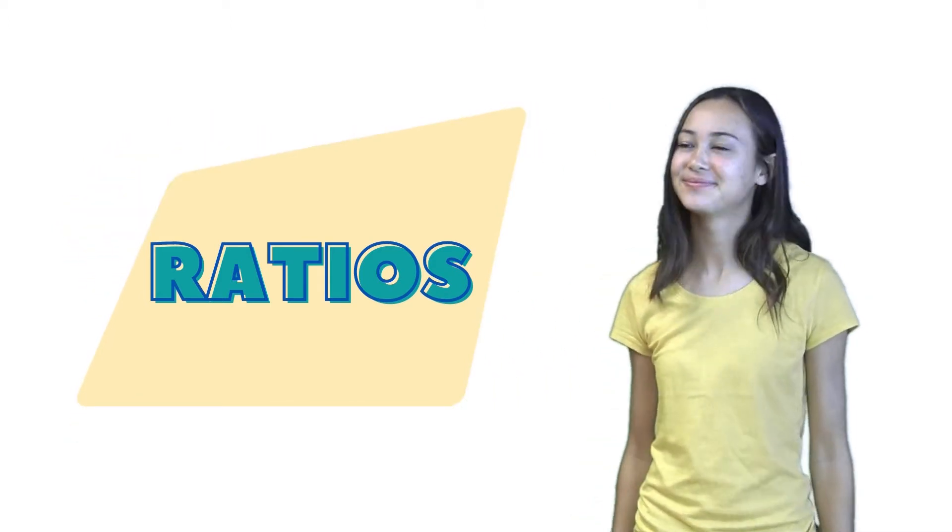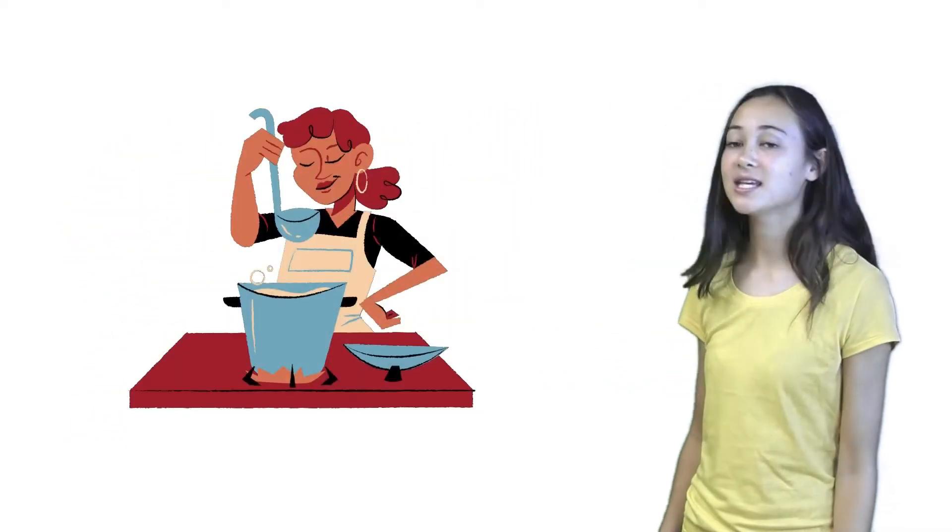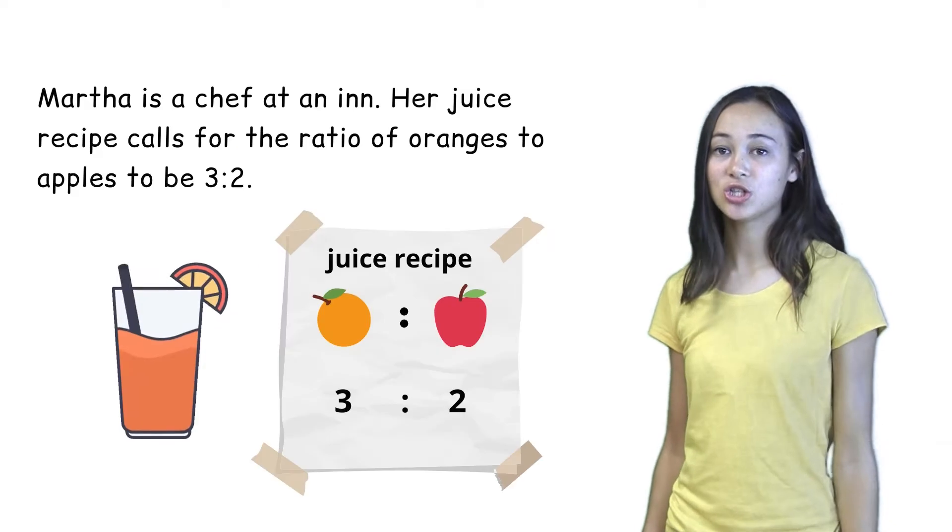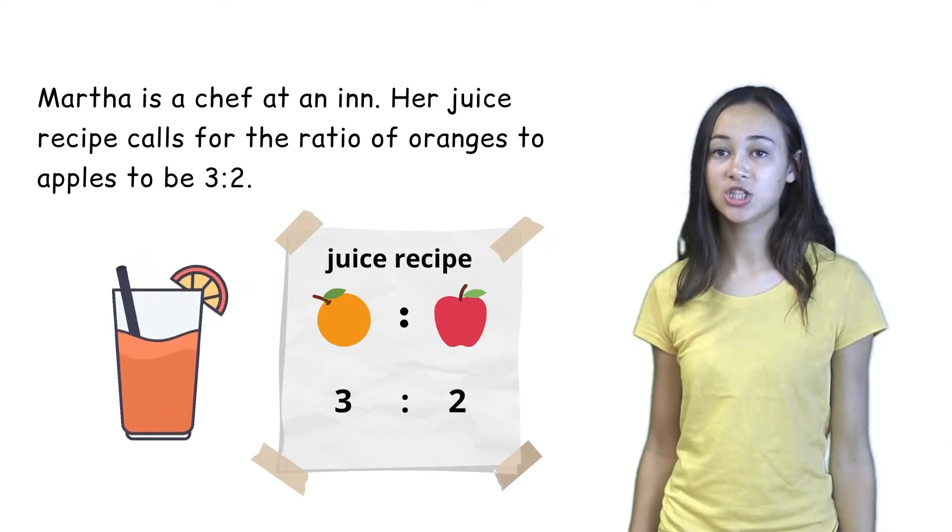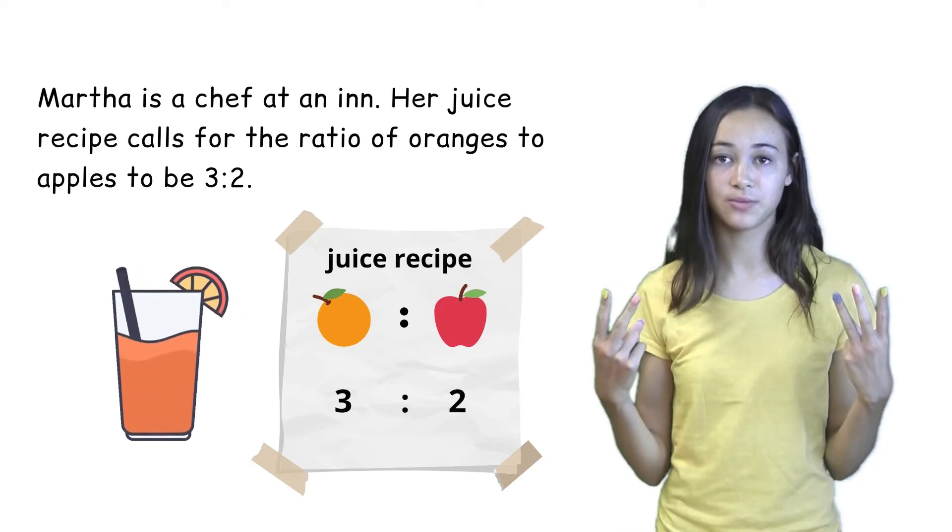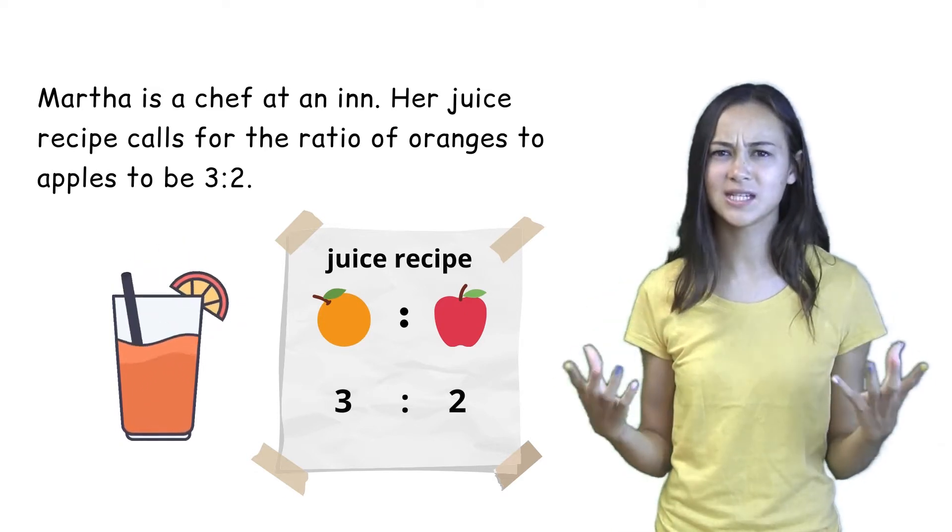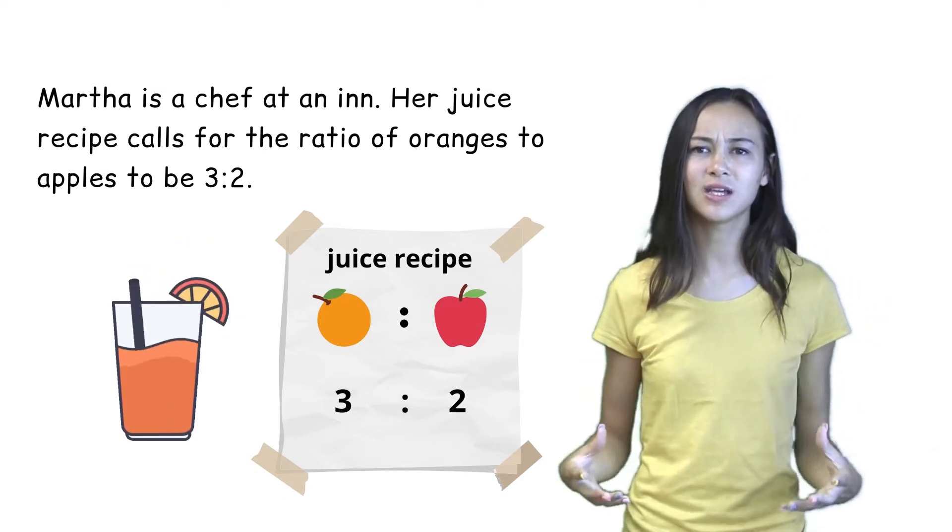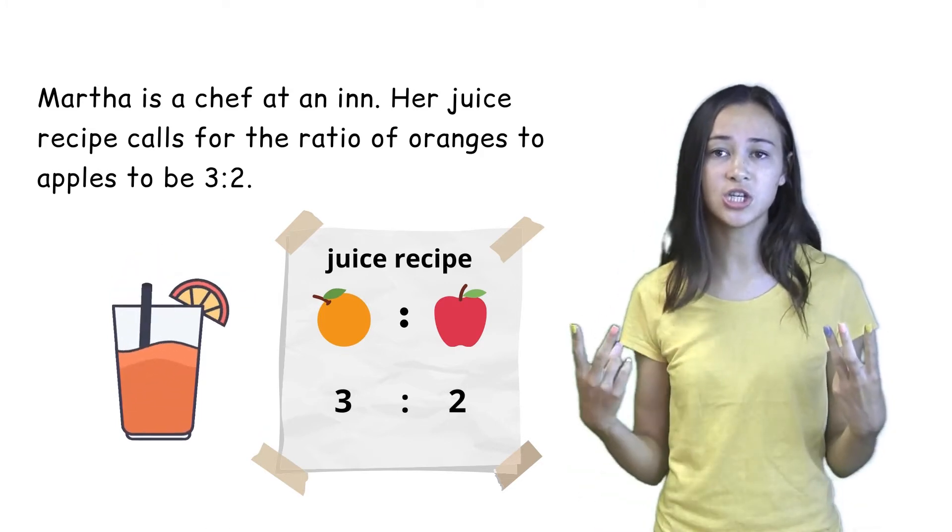Let's start with an example. Martha is a chef at an inn. Her juice recipe calls for a ratio of oranges and apples to be 3 to 2. So what does this mean? What does it mean for a ratio of oranges and apples to be 3 to 2?